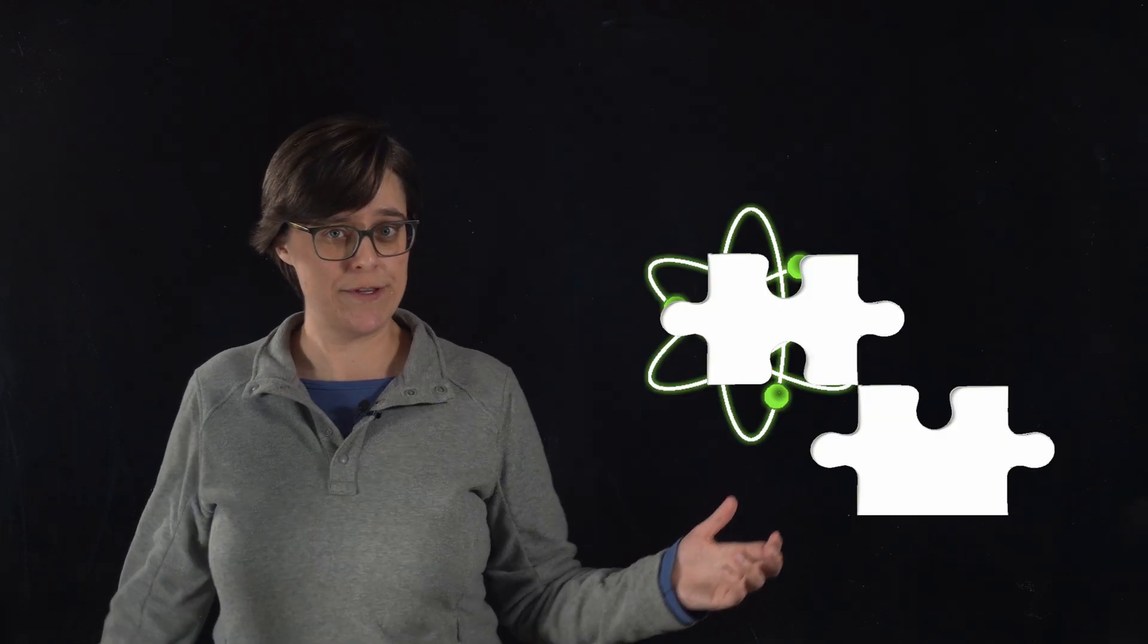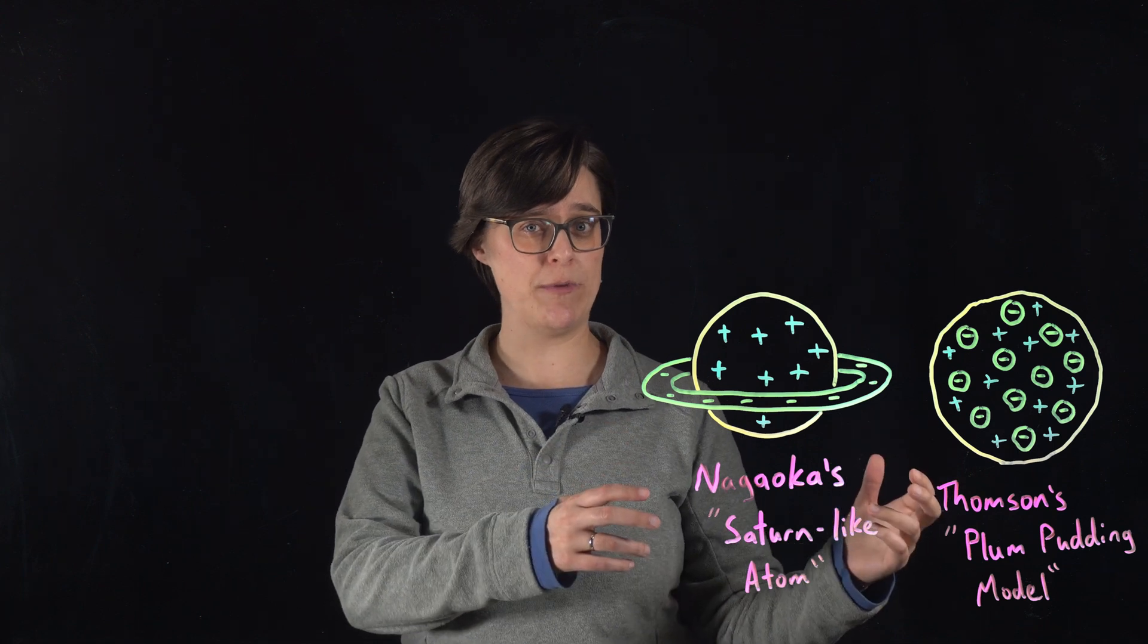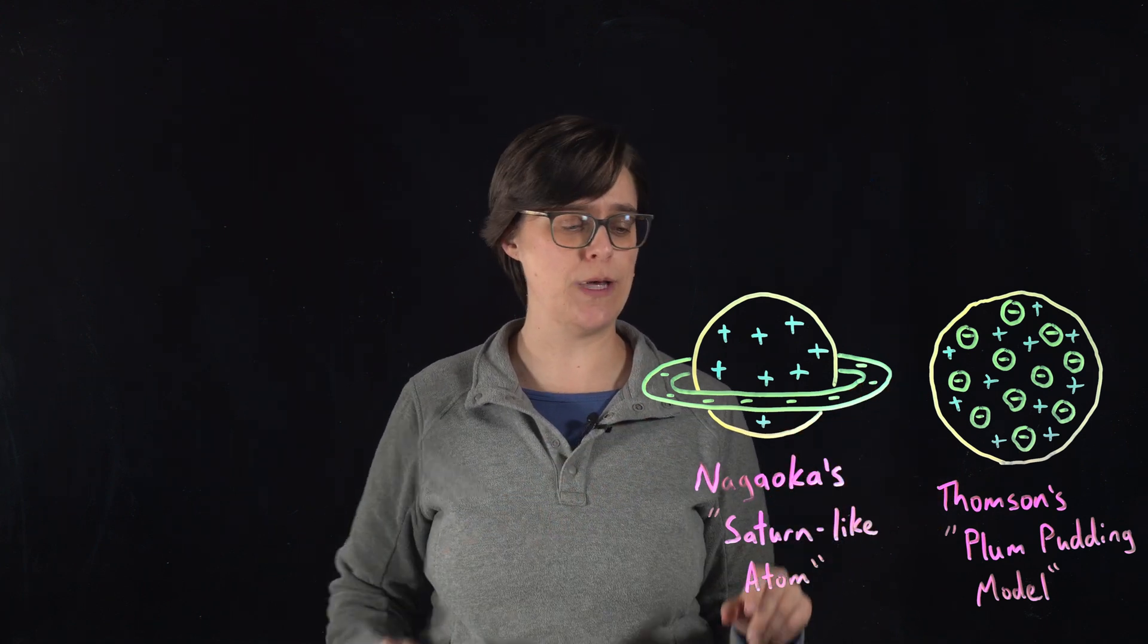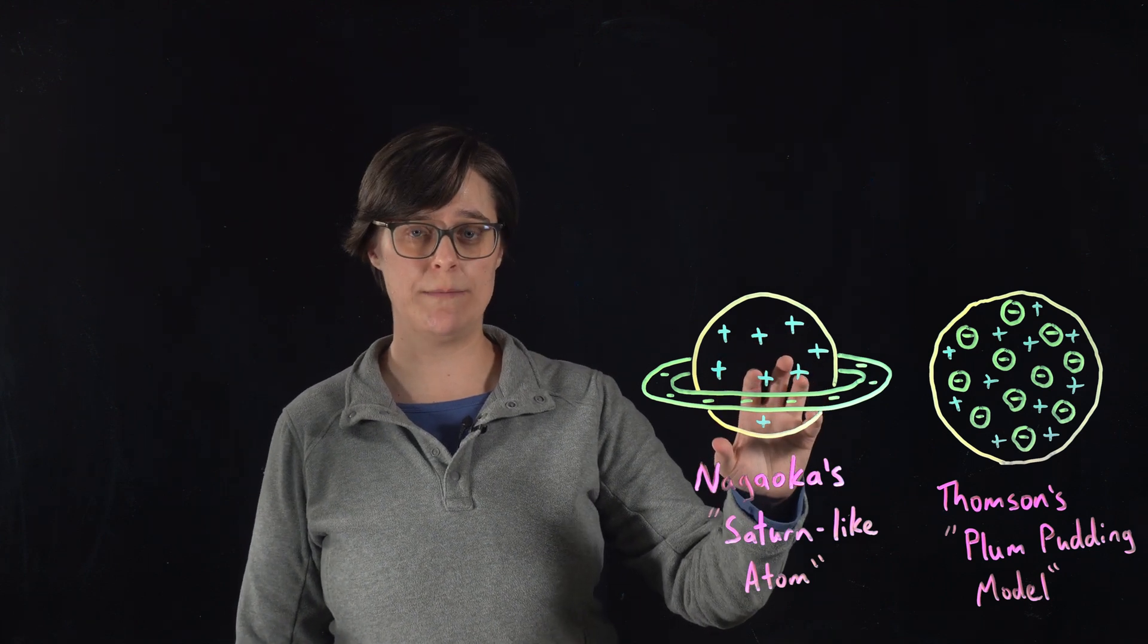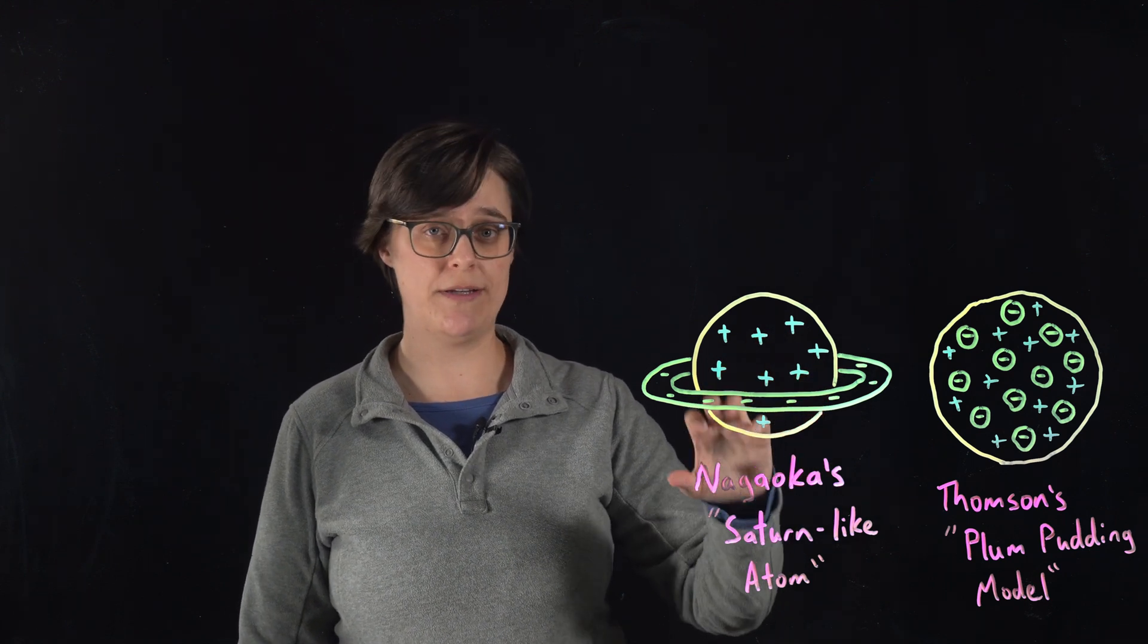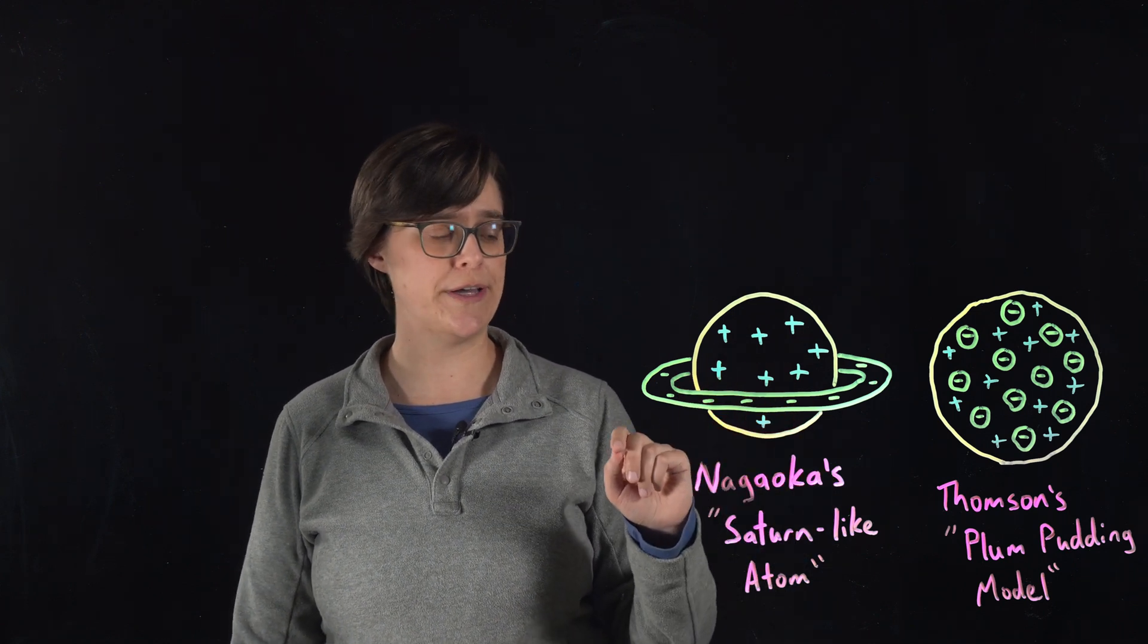So what does this mean for the structure of the atom? Well, the two competing models that we had before this actually still hold up. We have Hantaro Nagaoka's Saturn-like atom, in which we have a positively charged sphere surrounded by a halo of negatively charged electrons.